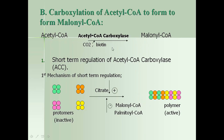Short-term regulation of acetyl-CoA carboxylase — first mechanism. The inactive form of acetyl-CoA carboxylase consists of protomers, each consisting of four subunits. The enzyme undergoes activation by citrate; it is activated by citrate and inhibited by high concentrations of malonyl-CoA and palmitoyl-CoA. Citrate causes polymerization of these inactive protomers into active polymers, which are then ready to synthesize fatty acids.